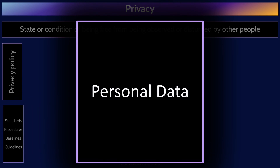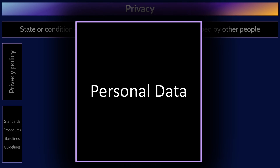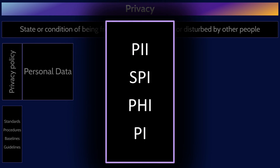The major thing that we are protecting from a privacy perspective is personal data, which can be defined as information that can be used on its own or in combination to identify an individual. Different laws and regulations refer to personal data in different ways. These are all just examples of personal data.